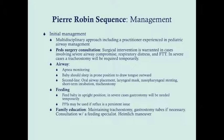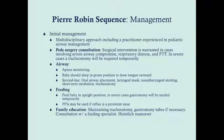Initial management is a multidisciplinary approach. You want a practitioner experienced in pediatric airway management — possibly a pediatric anesthesiologist — and a pediatric surgery consultation, because severe airway compromise, respiratory distress, or failure to thrive may require a tracheostomy or gastrostomy. While in the hospital, these babies should be on apnea monitors and sleep prone. If apnea spells continue, second-line options include oral airway placement, laryngeal mask, nasopharyngeal stenting, short-term intubation, or tracheostomy.